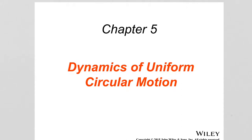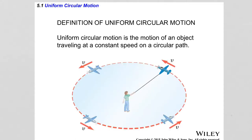In this chapter, I will discuss the dynamics of uniform circular motion. Uniform circular motion is the motion of an object traveling at a constant speed on a circular path.